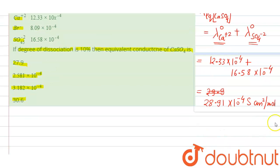But this is the equivalent conductivity at infinite dilution. Now the formula of alpha is equals to equivalent conductivity divided by equivalent conductivity at infinite dilution.